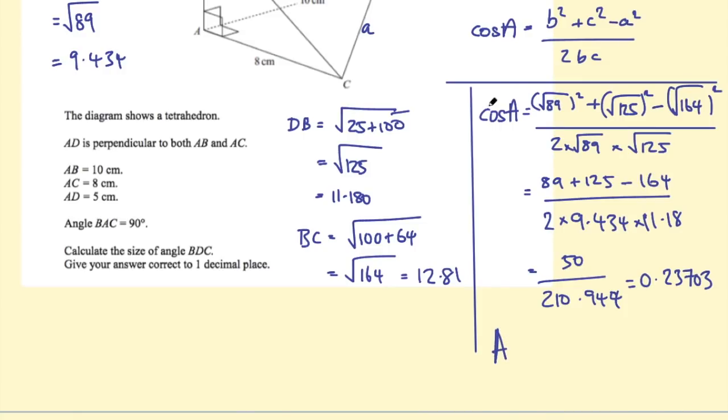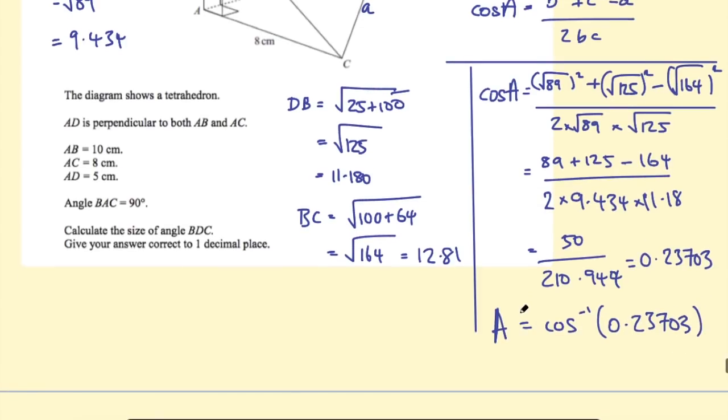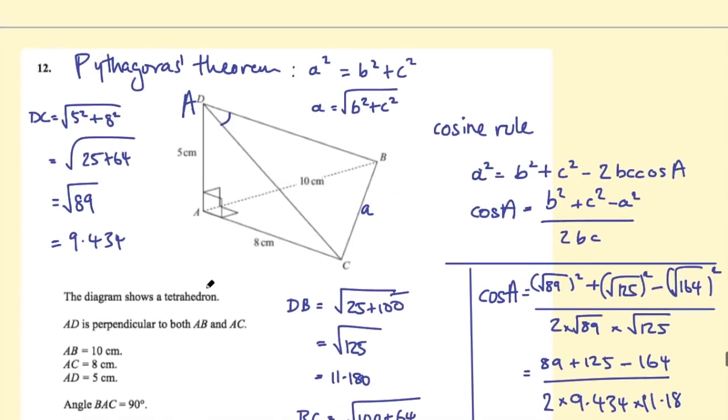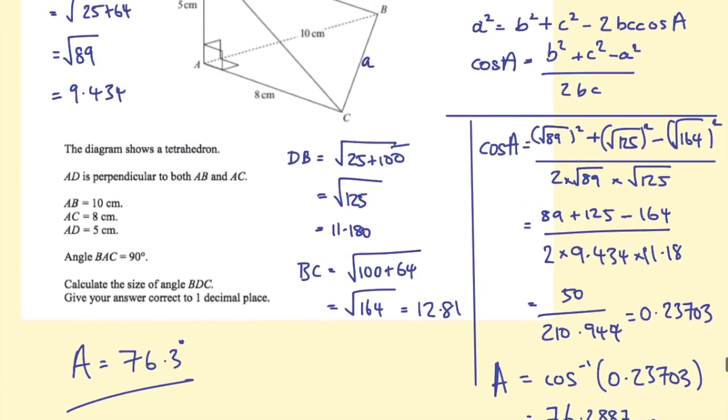So to find the angle A we need to do the inverse of the cosine of 0.23703, so the inverse of the cosine of that number into your calculator and you get 76.2887. And we need to round it off to one decimal place so angle BDC will be 76.3 degrees.